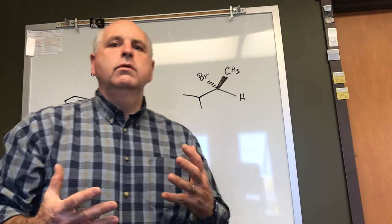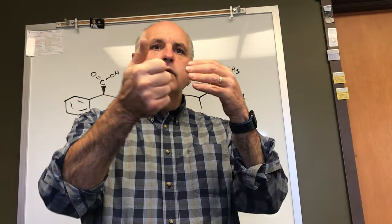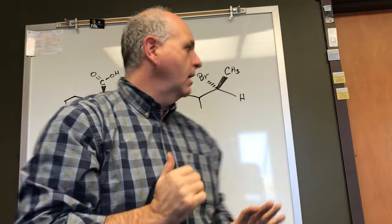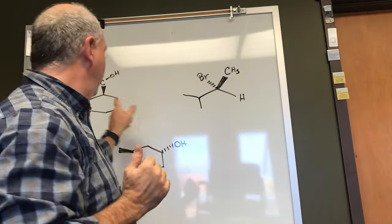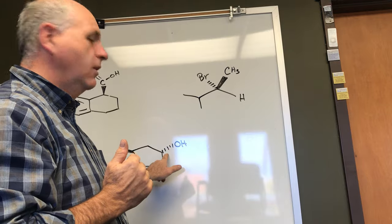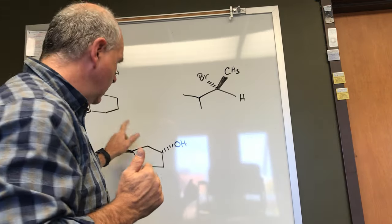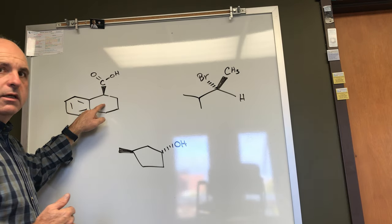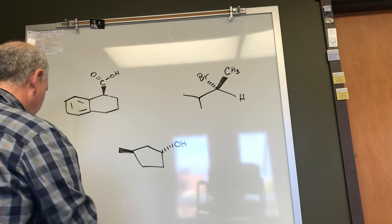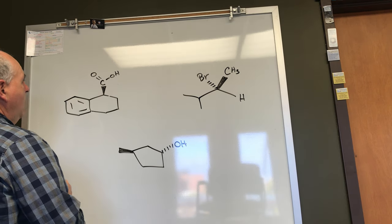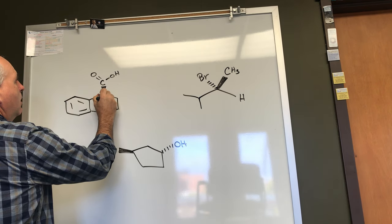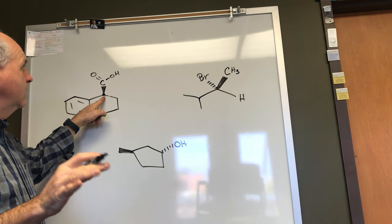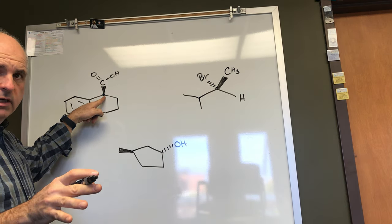I want to record this short video to show you how to determine R/S configuration and use your hands to determine which direction those groups are going. I have three examples on the board with four different stereogenic carbons. Let's take a look at this molecule on the upper right first — there is a stereogenic carbon here that we need to determine the R/S configuration for, and you notice there are only three bonds shown, so one is missing and that would be a hydrogen.